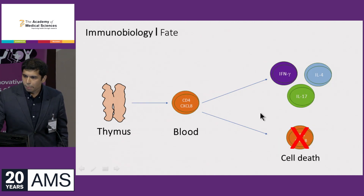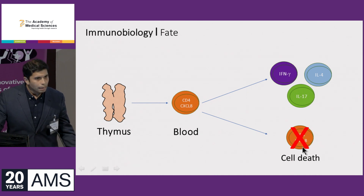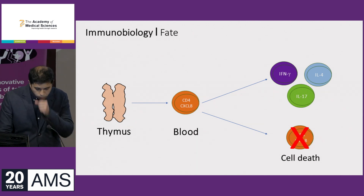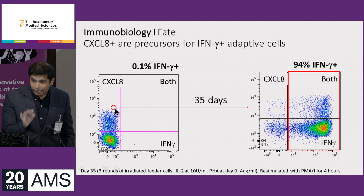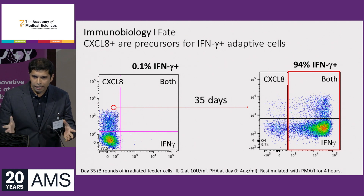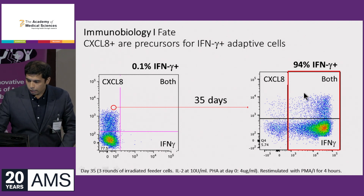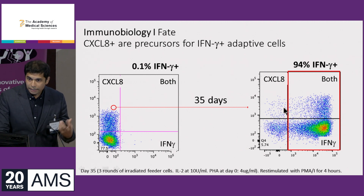These thymocytes then develop and come out into the periphery. About 25% of cells in the neonate produce CXCL8, compared to about 4% in the adult. So what happens over time? Do they die off through apoptosis, or are they converting to conventional interferon-gamma-producing effectors? We think the latter is the case, and we published this last year. We took a single CXCL8-producing T-cell and cloned it — activating it over 35 days, one cell became thousands of progeny — and if you activate them at this stage, 94% are now producing interferon-gamma. So this is a novel pathway of Th1 T-cell development.